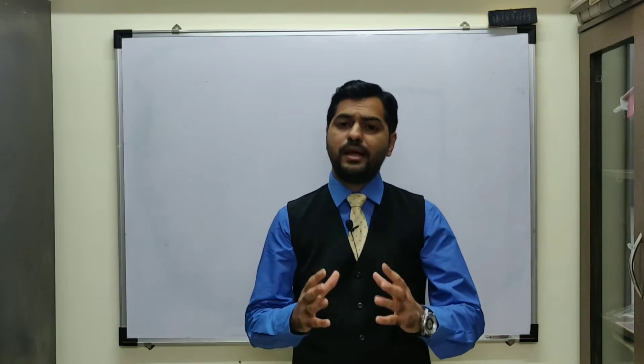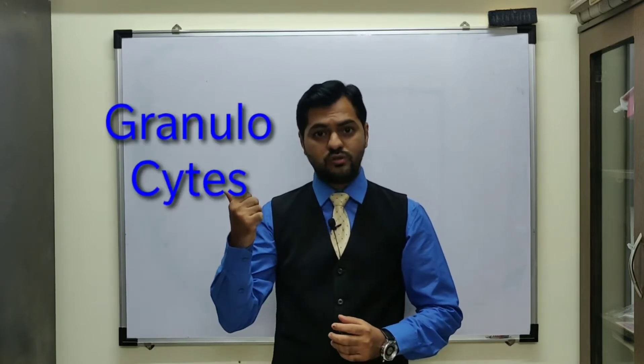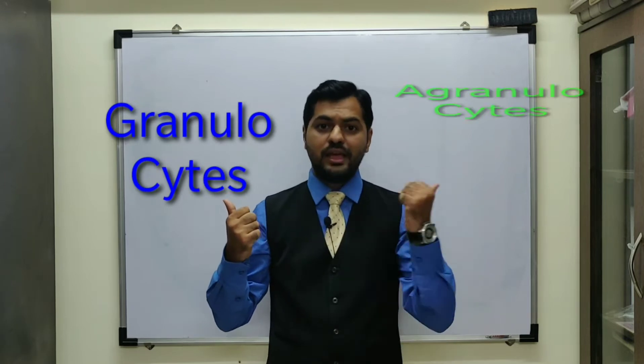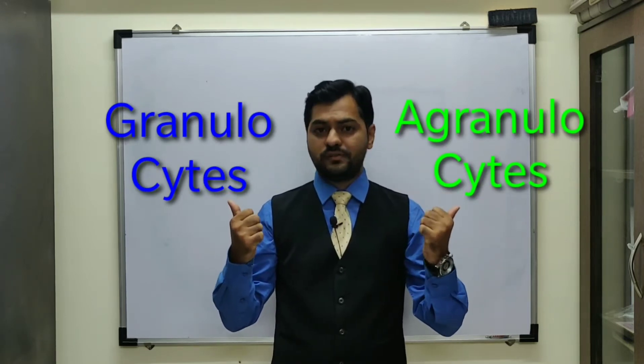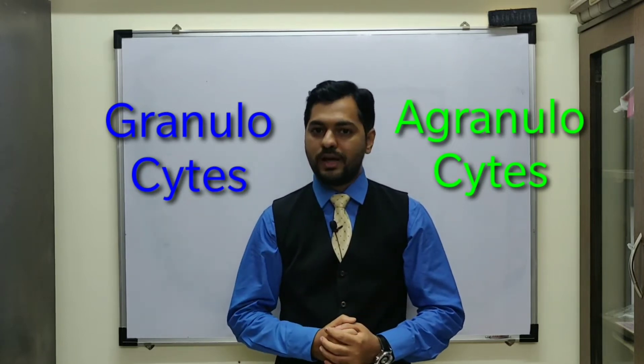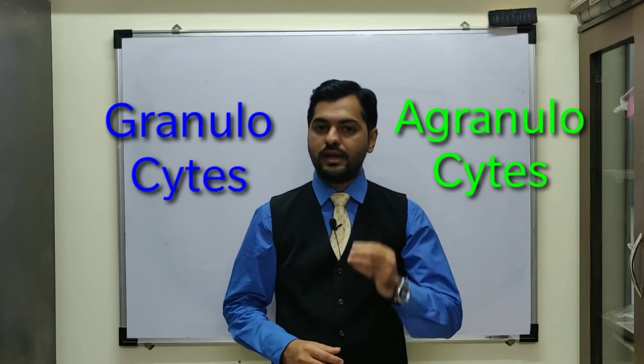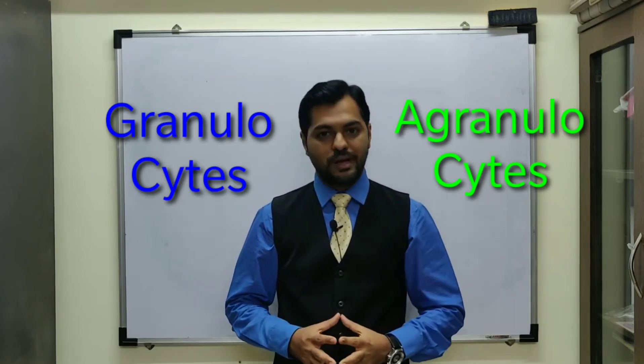Leukocytes are mainly classified into two categories: granulocytes and agranulocytes. The major difference is granulocytes contain granules in their cytoplasm whereas agranulocytes do not contain granules in the cytoplasm.